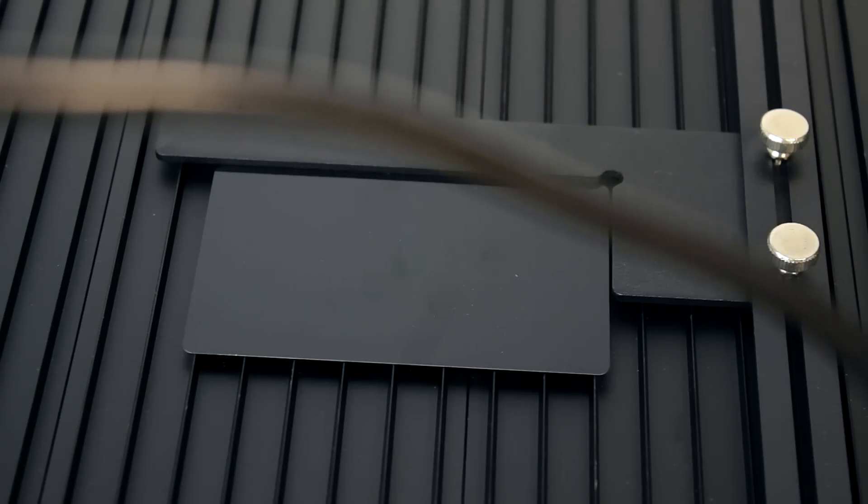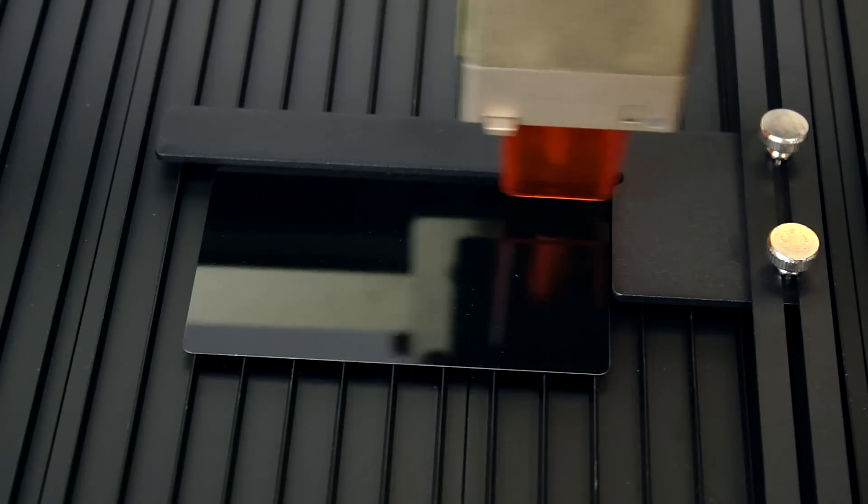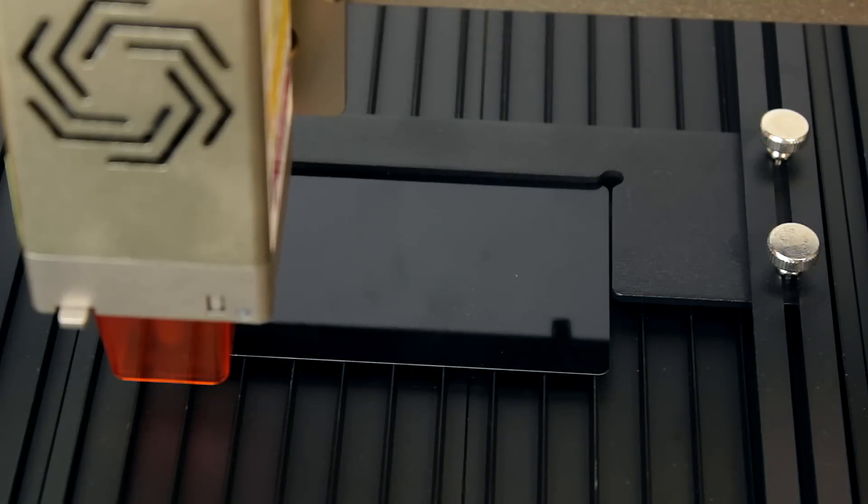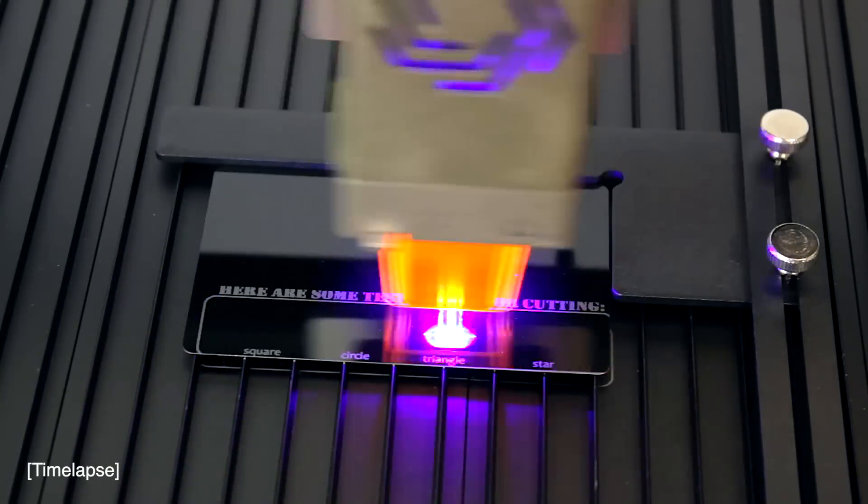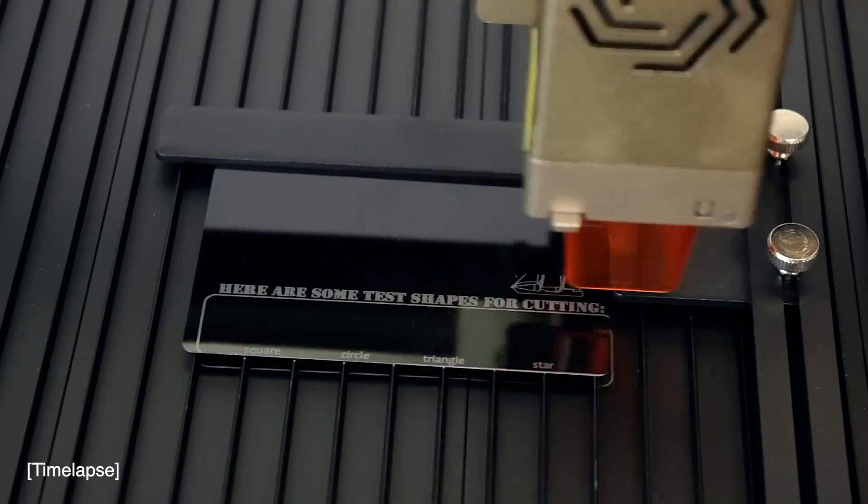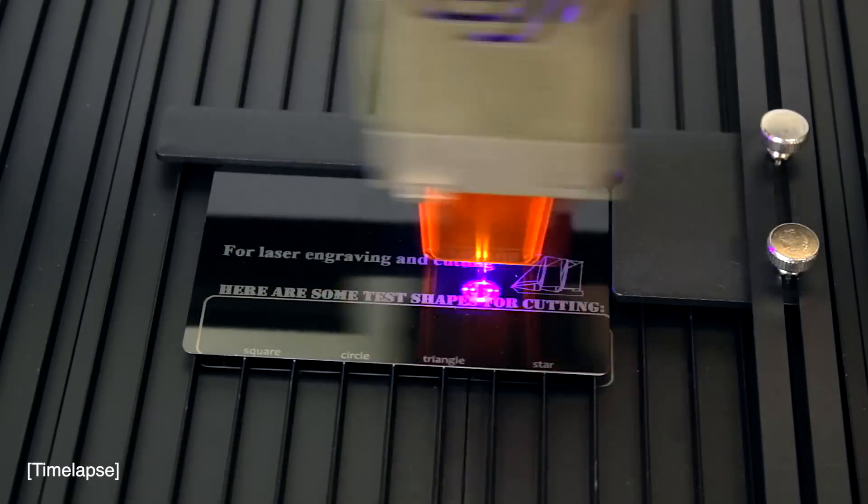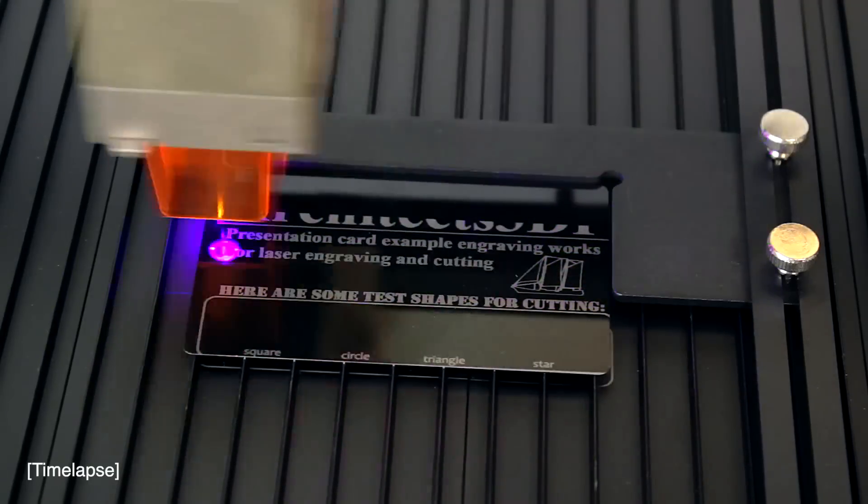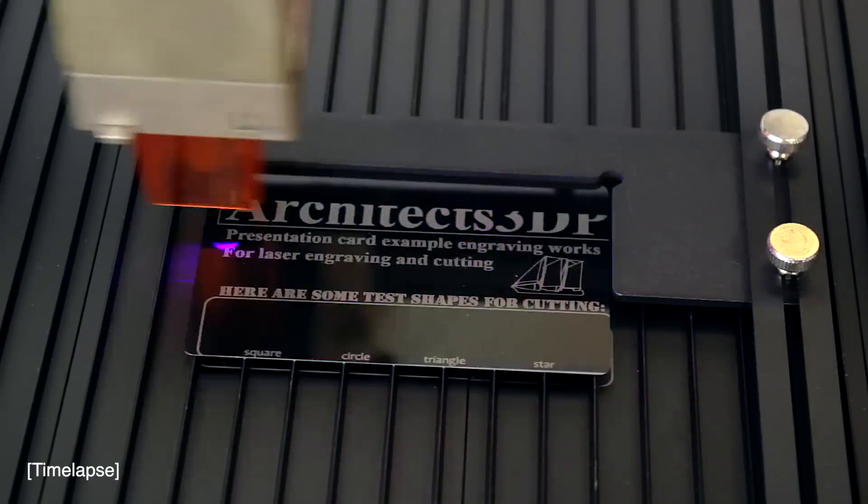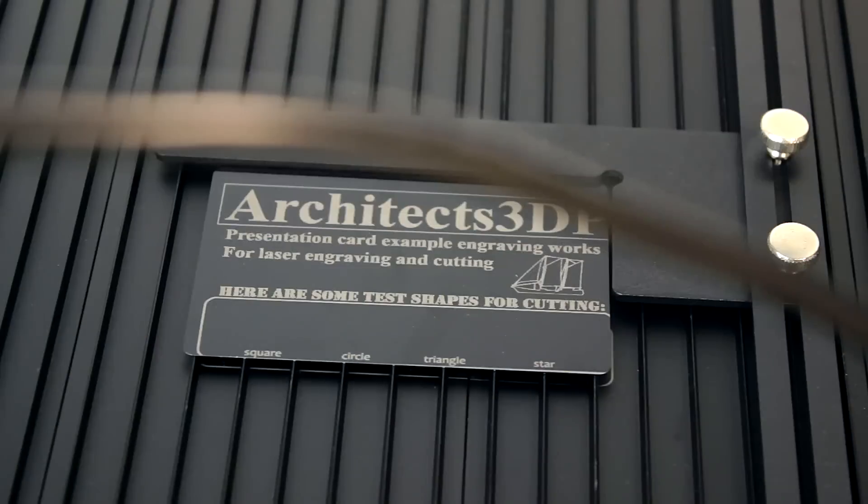Next, I'm going to test the engraving with this metallic black business card. After setting the parameters according to the table included in the SD card, and again misplacing the card, the engraving work is going pretty well. It has finished, and the result is just fantastic.